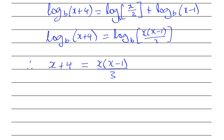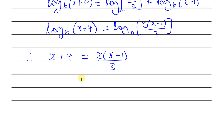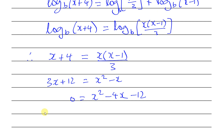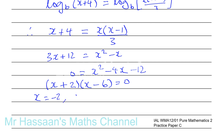Now we solve algebraically. We multiply both sides by 3, giving 3x + 12 equals x squared minus x. Rearranging gives x squared minus 4x minus 12 equals zero. This factorises as (x + 2)(x - 6), so x equals negative 2 or x equals positive 6.